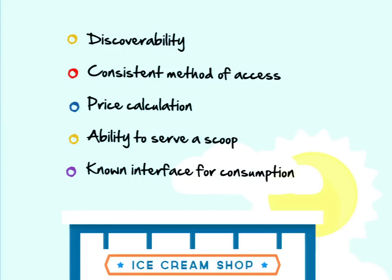There are also different actions that need to be performed. With ice cream, you need to calculate the price so you can charge the customer, and there needs to be a known interface for the consumer to eat that ice cream. It'd be really weird if every time you ordered a scoop of ice cream, there was a different way you had to eat it — like, if it's vanilla, hold it in your left hand, but if it's chocolate, hold it in your right hand and tilt it to the side. This applies to a lot of things in Drupal too.